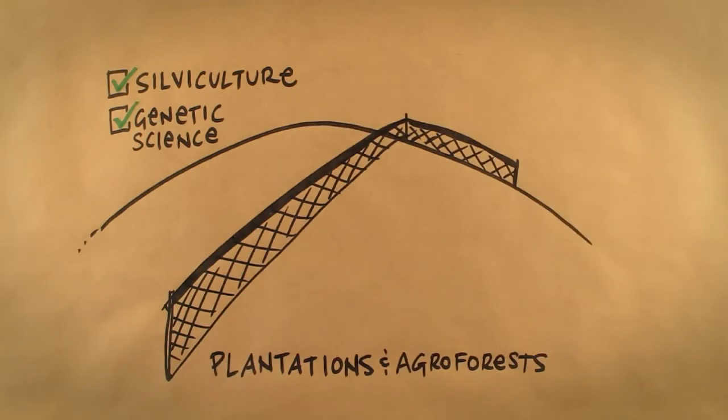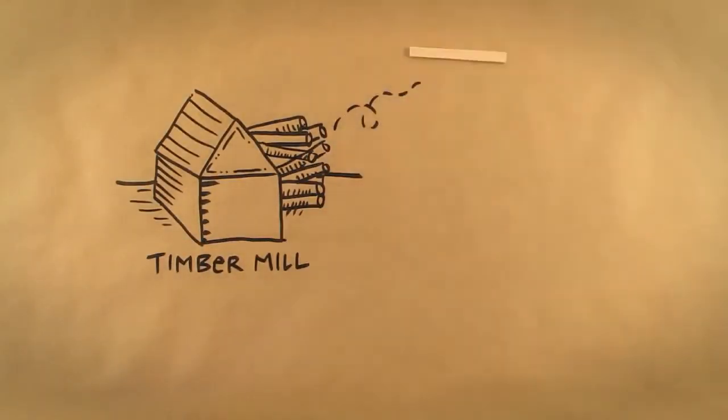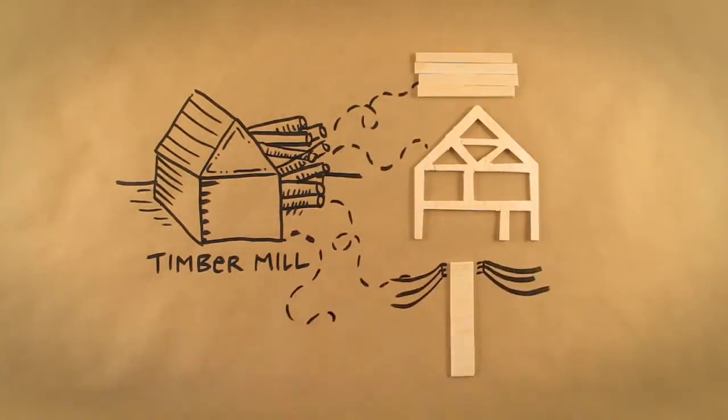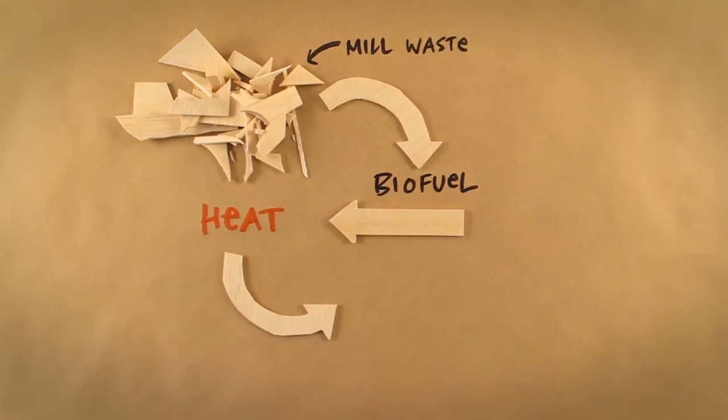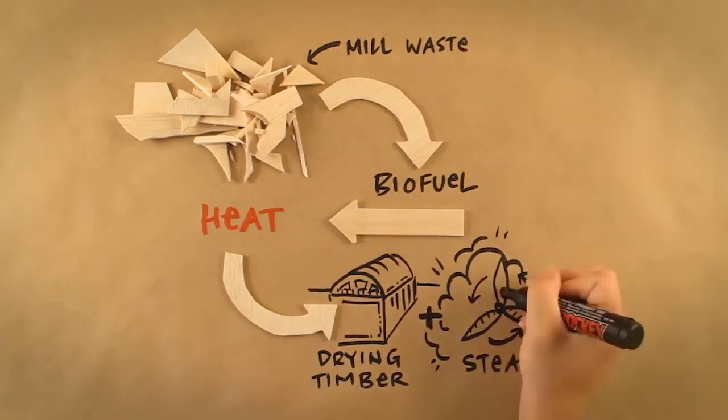When trees are harvested, the wood is taken to a local timber mill to be processed into a wide range of products, such as timber flooring, frames for housing, telegraph poles to hold electricity wires, paper to write on, furniture for our homes and many more things. Mill waste, including sawdust, can now be used as a biofuel to fuel boilers, which produce heat that can be used for drying timber in kilns. Excess heat can also be harnessed to produce steam and run turbines that generate additional electricity.